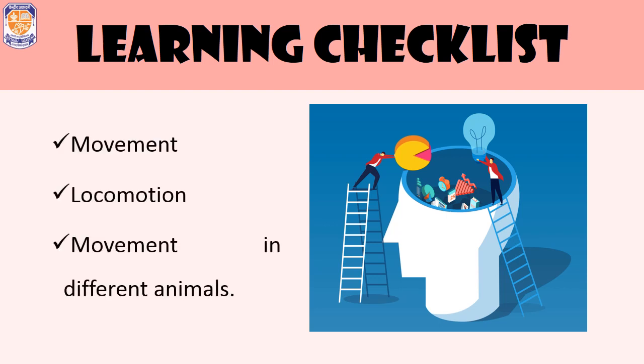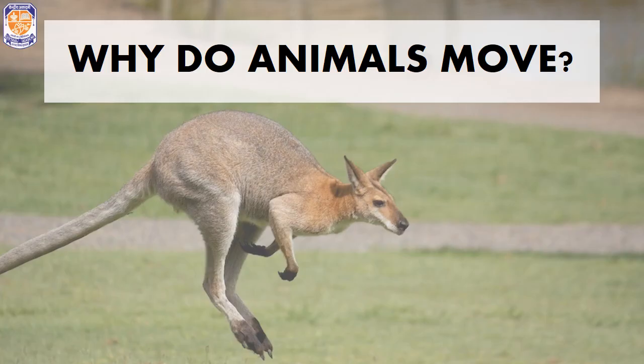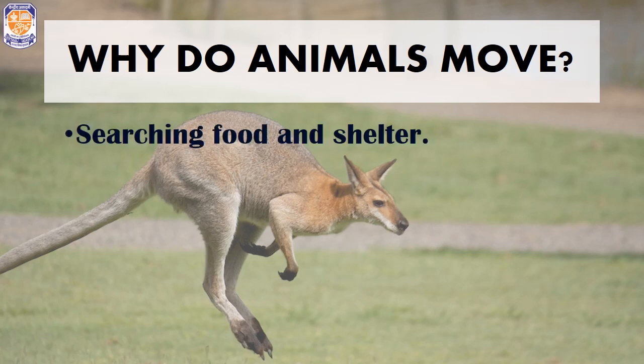There are different types of movements shown by all animals. Some animals hop, some swim, some fly, while some creep. Animals move in search of food and shelter. Unlike plants, animals are dependent on others for food, so they need to move around in search of food as well as shelter.